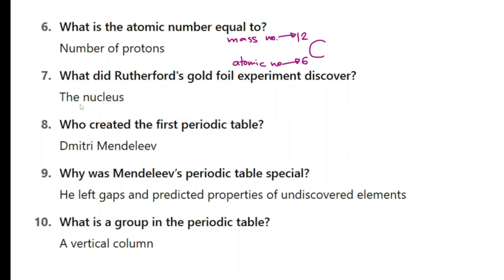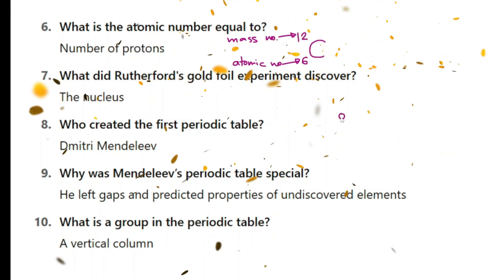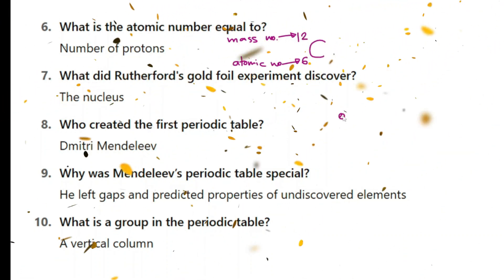Before Rutherford it was the plum pudding model — people thought that J.J. Thompson's plum pudding model was correct. But Rutherford did an experiment known as the gold foil experiment or alpha particles scattering experiment, and he figured out that all of the mass of an atom is concentrated in a tiny nucleus and most of the atom's space is empty.